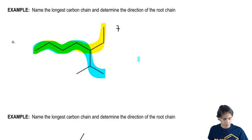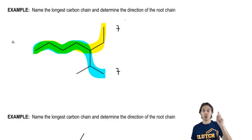So what I'm doing right here is I'm actually still going through rule number one. I haven't even gotten to two yet. Two is direction. One is just which chain is going to be the longest one or is going to be my root chain.